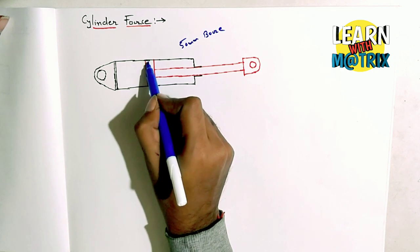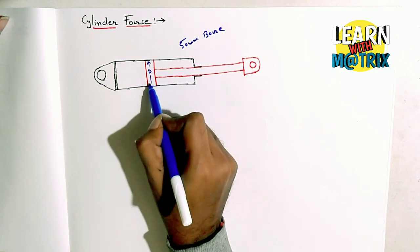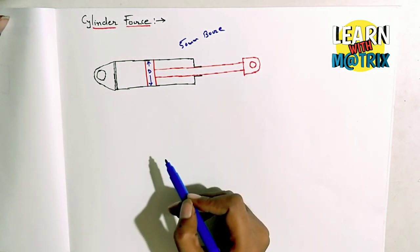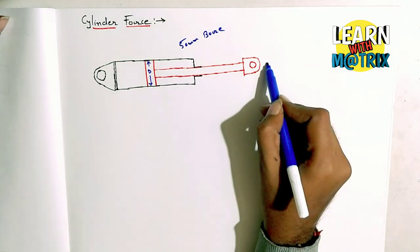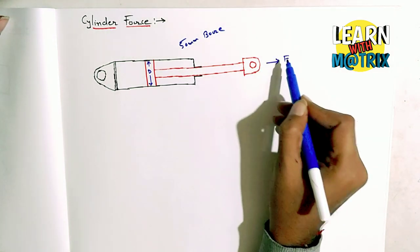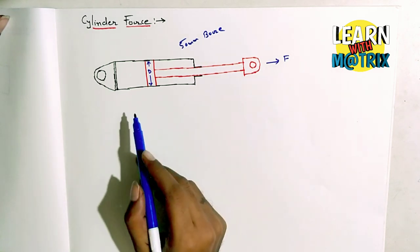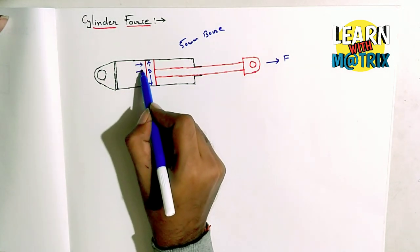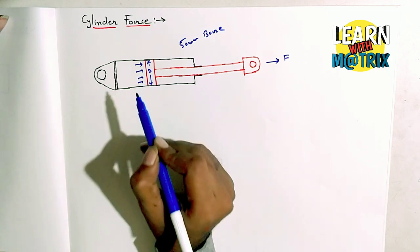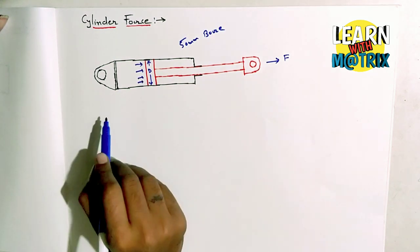Bore means nothing but the cylinder's piston diameter. Now to find out cylinder force, we need pressure - at how much pressure we are going to the cylinder. Generally, pneumatic cylinders